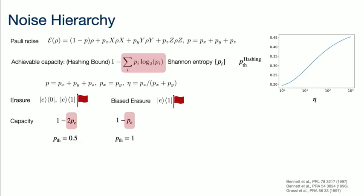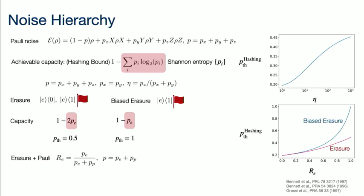You can do the same thing for the erasure and biased erasure channels. The threshold is 50% for the standard erasure and 100% for biased erasures. You can also have a channel with erasures plus Pauli noise — erasures at rate PE and some Pauli noise if an erasure doesn't happen. You can define the erasure fraction: erasure fraction of one means all errors are erasure errors, and zero means all errors are Pauli errors. Again, I can calculate a lower bound on the threshold as a function of the erasure fraction — and again, biased erasures have a higher threshold.